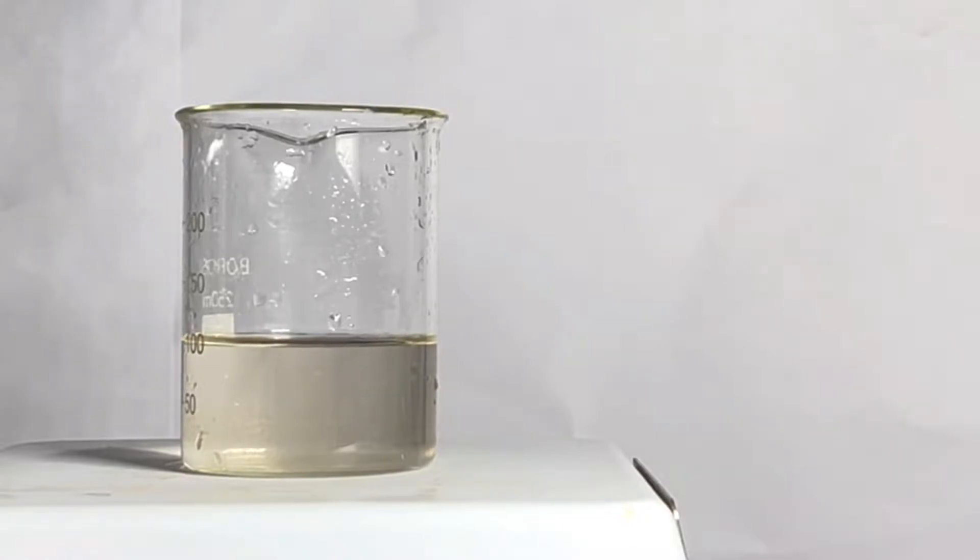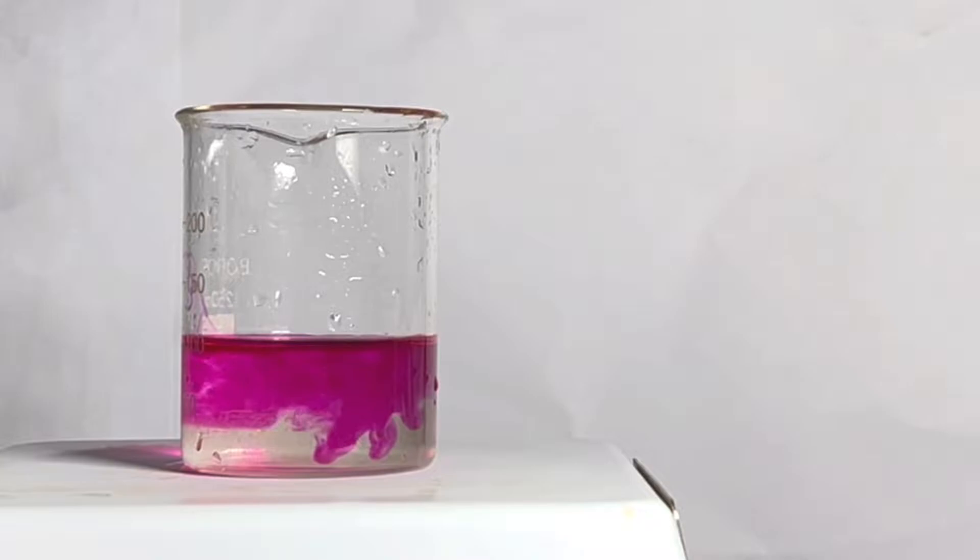Phenolphthalein is a very commonly used indicator in chemistry and is mainly used in acid-base titrations. It turns colorless in acidic solution and pink in basic solution.